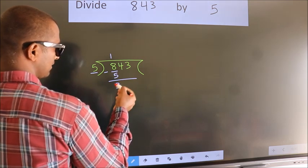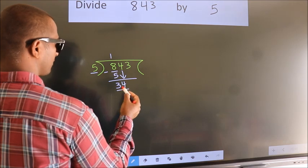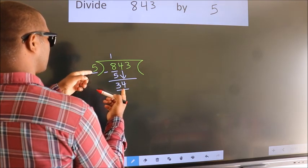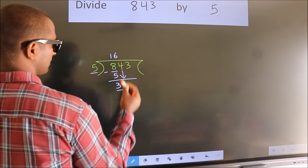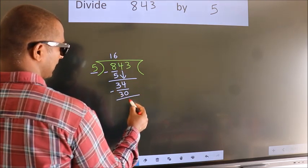After this, bring down the beside number. So, 4 down. So, 34. A number close to 34 in the 5 table is 5×6=30. Now, we subtract. We get 4.